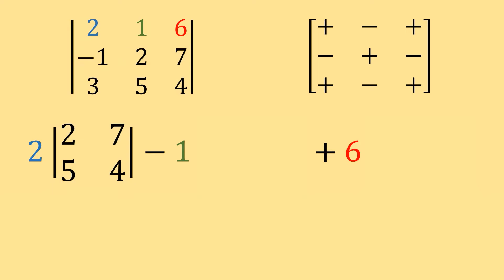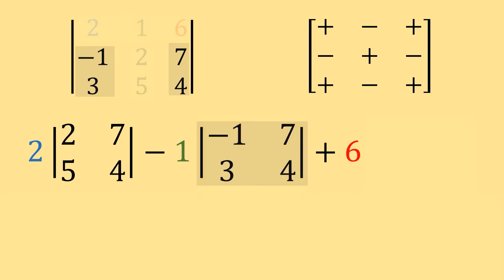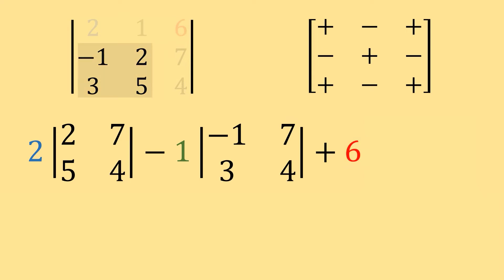For the position of 1, I cross out row 1, column 2, and I'm left with negative 1, 7, 3, 4. So I multiply 1 by the determinant of that. And finally for value 6, I cross out row 1, column 3, and I'm left with negative 1, 2, 3, 5. So I'm going to multiply 6 by the determinant of that.